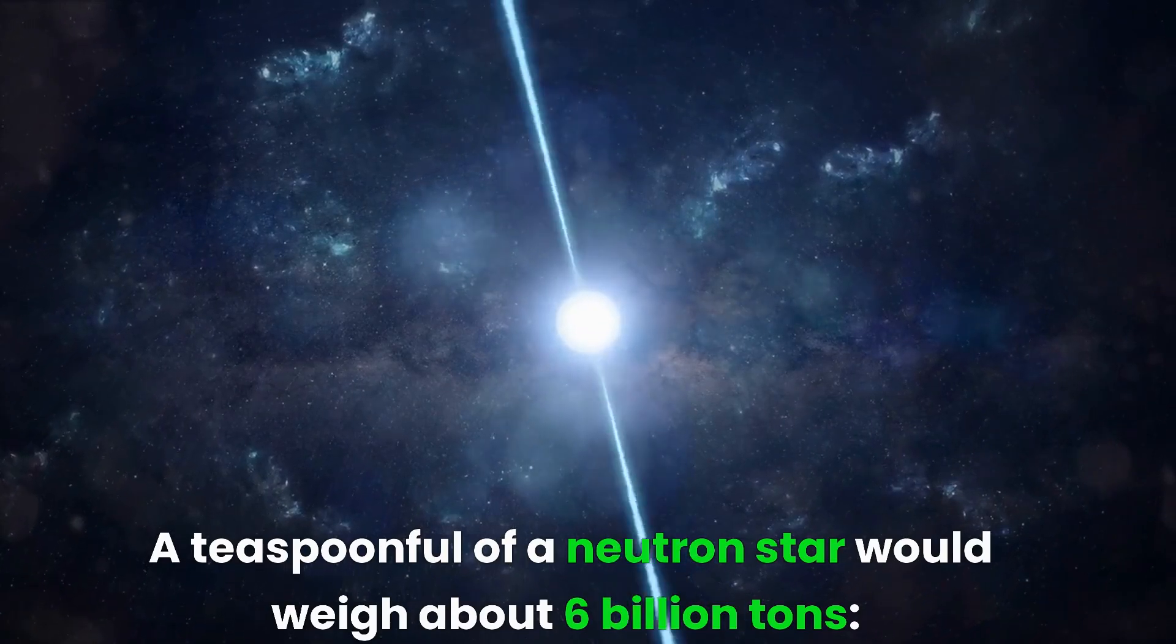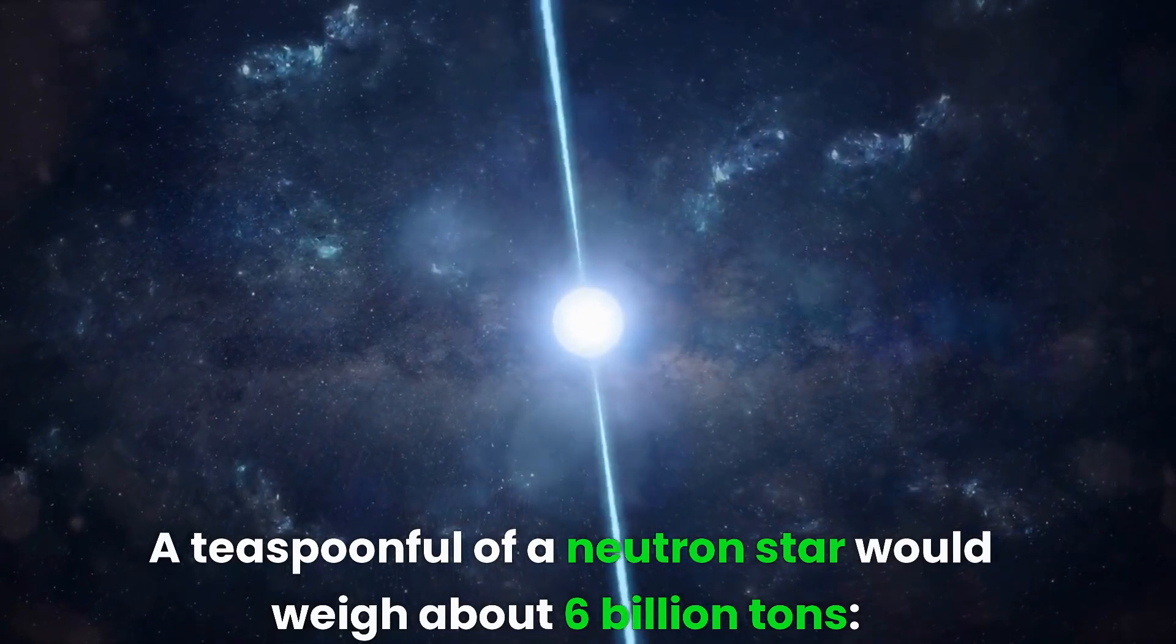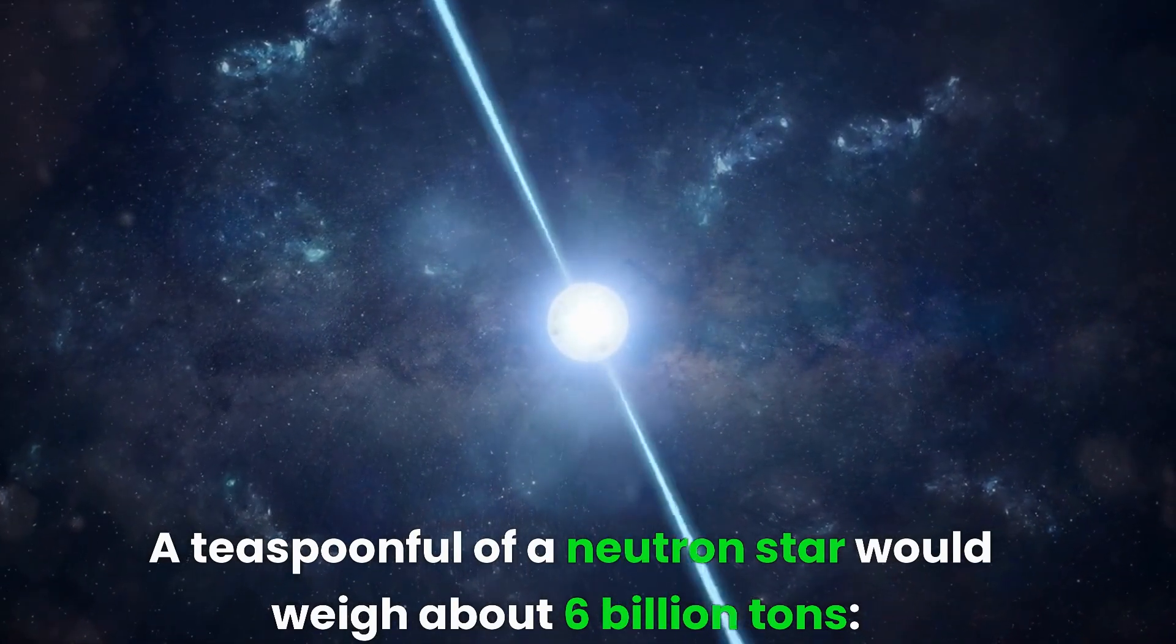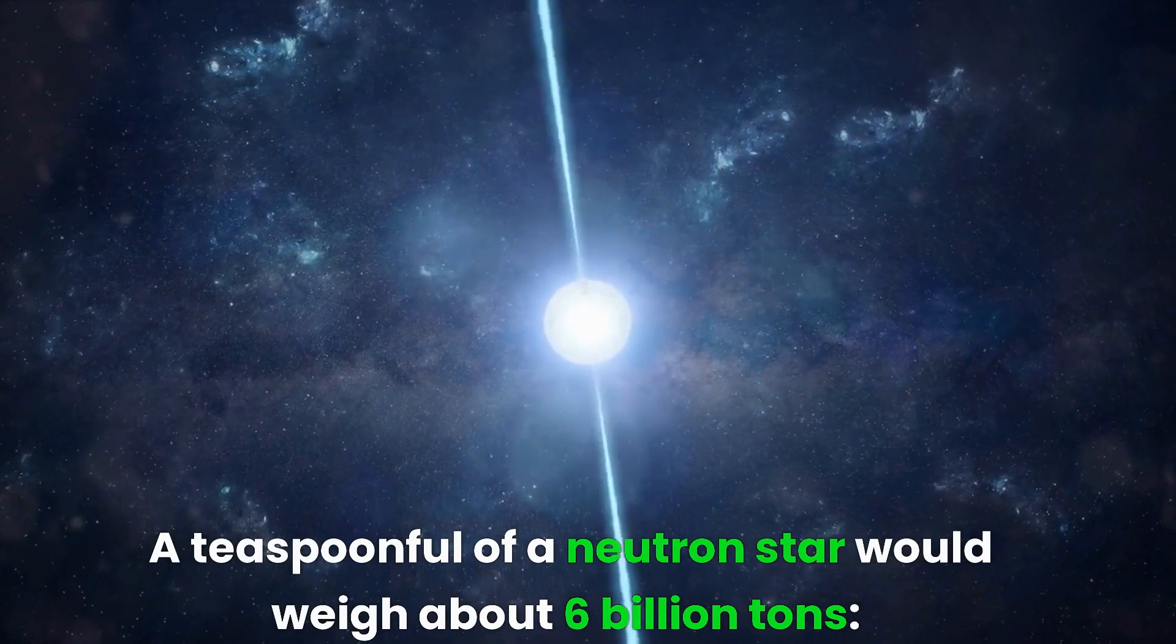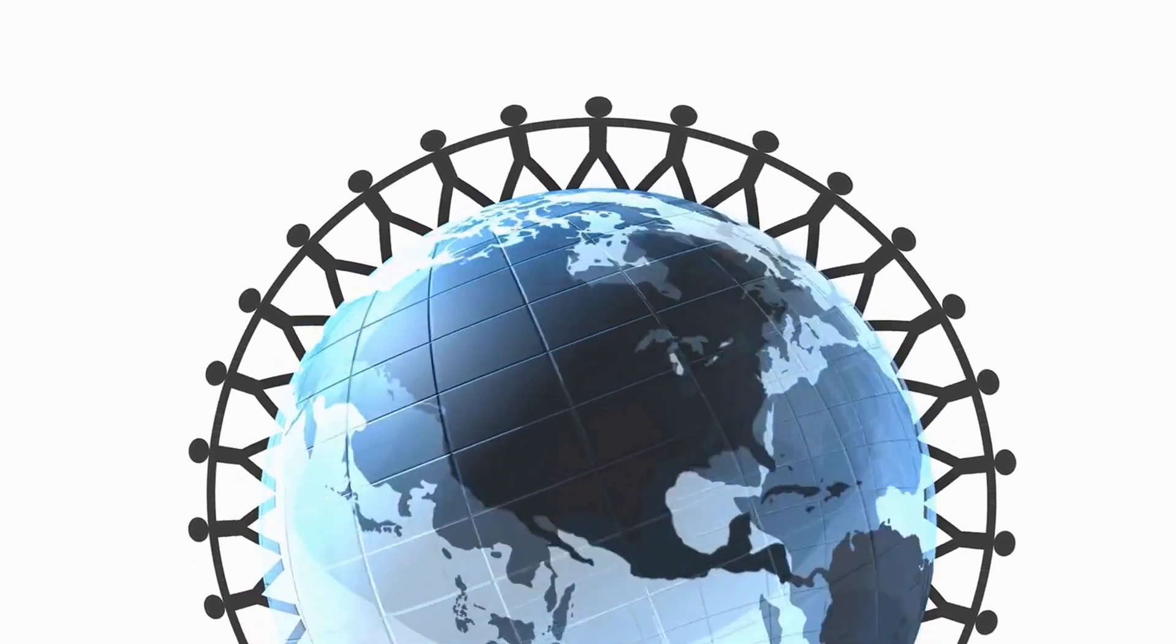A teaspoonful of a neutron star would weigh about 6 billion tons. Neutron stars are incredibly dense, and a teaspoonful of their material would weigh about 6 billion tons. That's roughly the weight of all the humans on Earth combined.